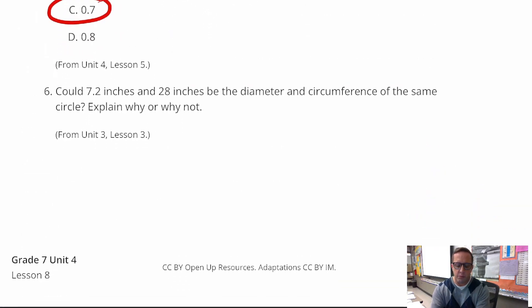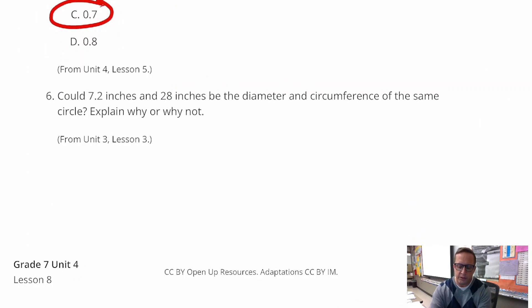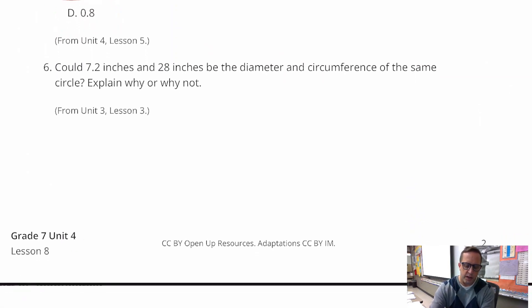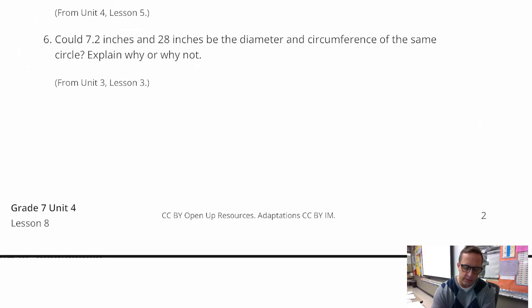For number 6, could 7.2 inches and 28 inches be the diameter and circumference of the same circle? Explain why or why not. And, well, circumference equals pi times diameter.